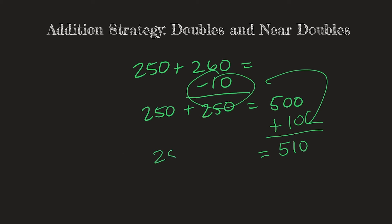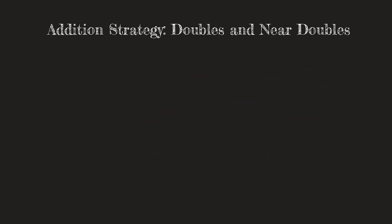So therefore, we know that 250 plus 260 equals 510 without having to do the standard algorithm. Remember, the strategy for doubles and near doubles is to create the problem to make it so that you have doubles and it's easier to mentally do the math.